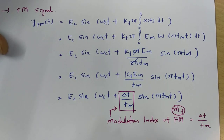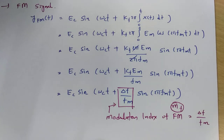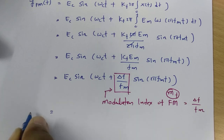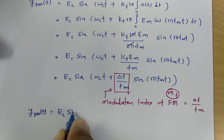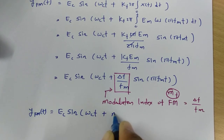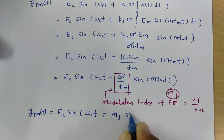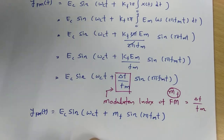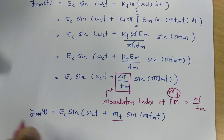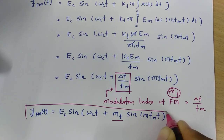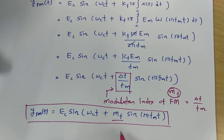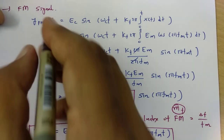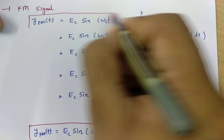So Mf is the modulating index, equal to delta f divided by fm. The FM signal can therefore be represented as y_FM(t) = Ec·sin(ωc t + Mf·sin(2π fm t)). This is the modulation index representation of the FM signal.